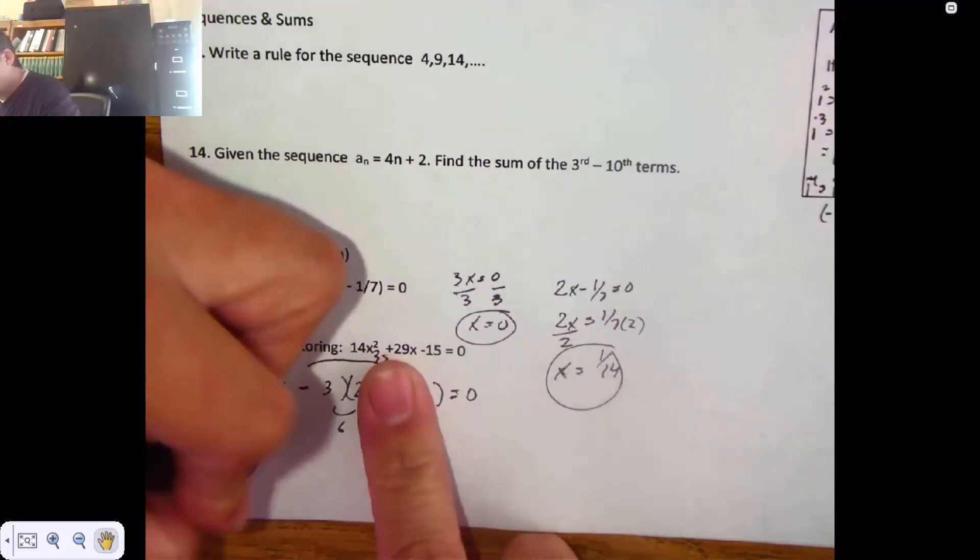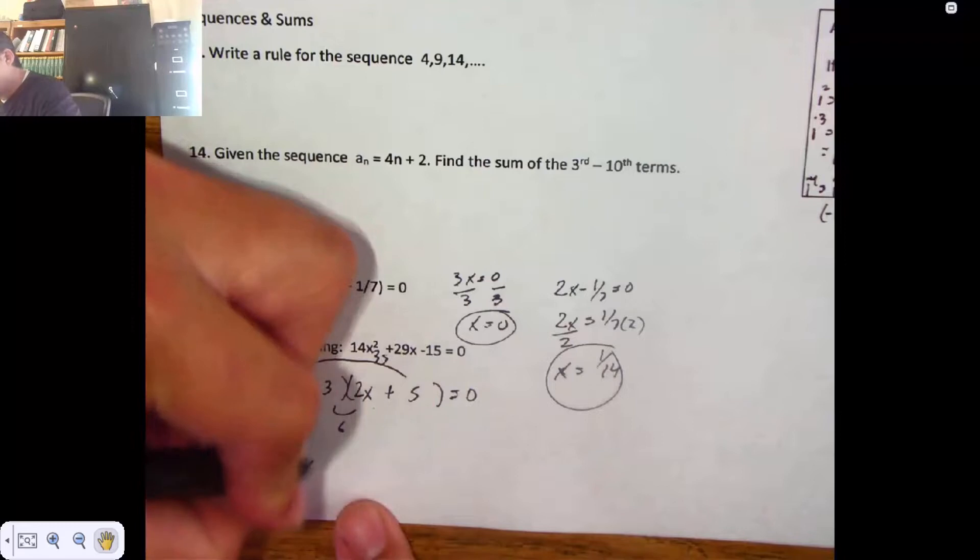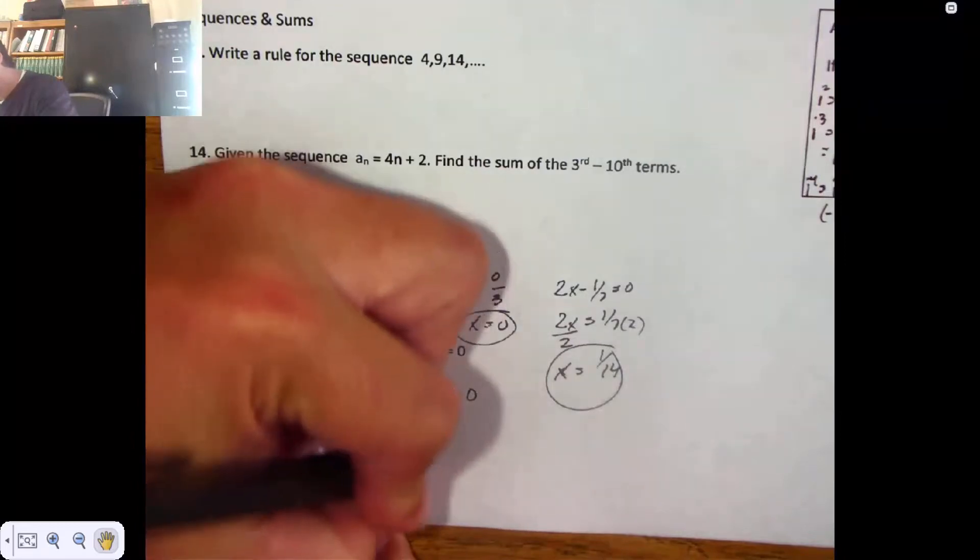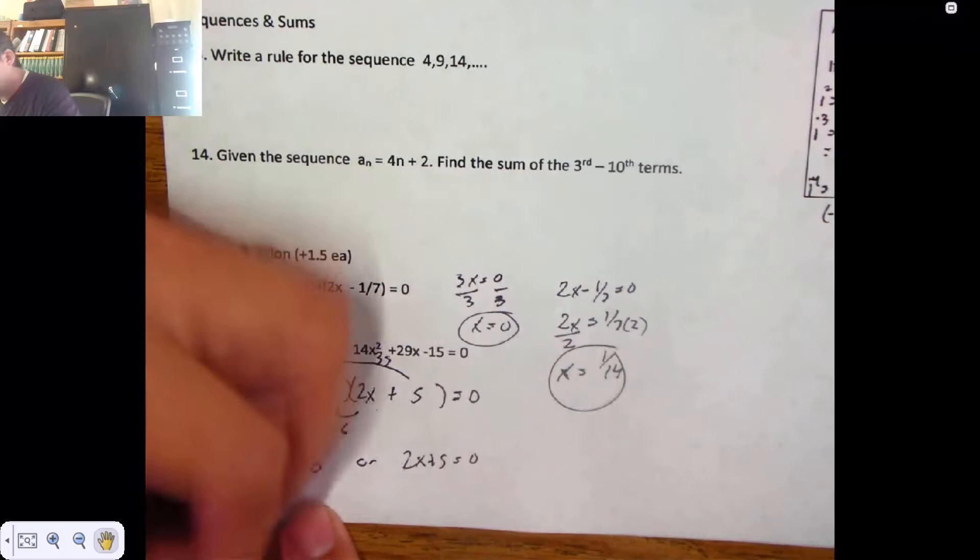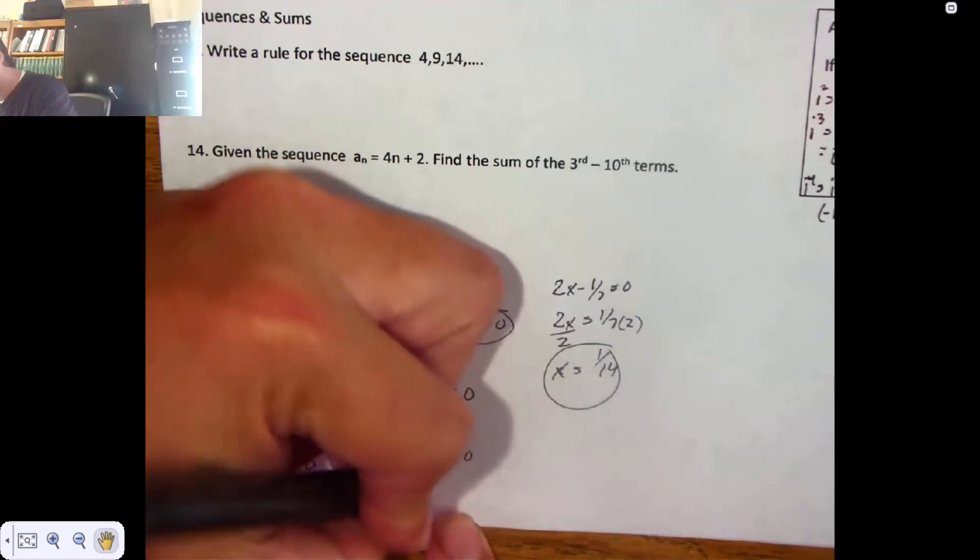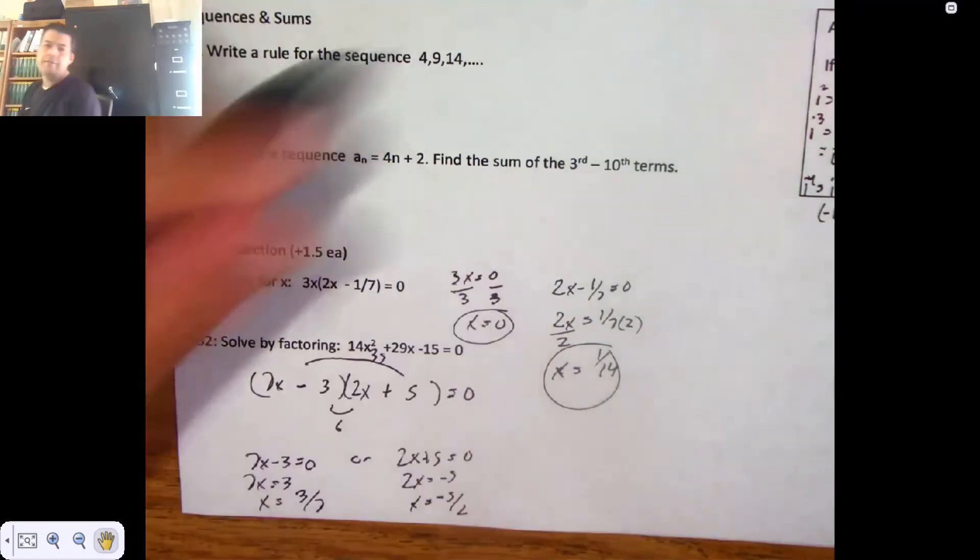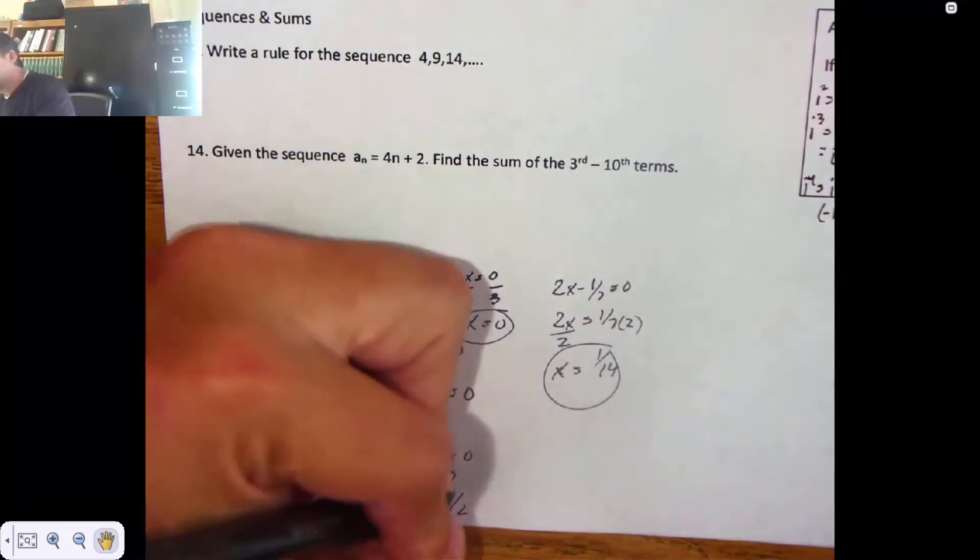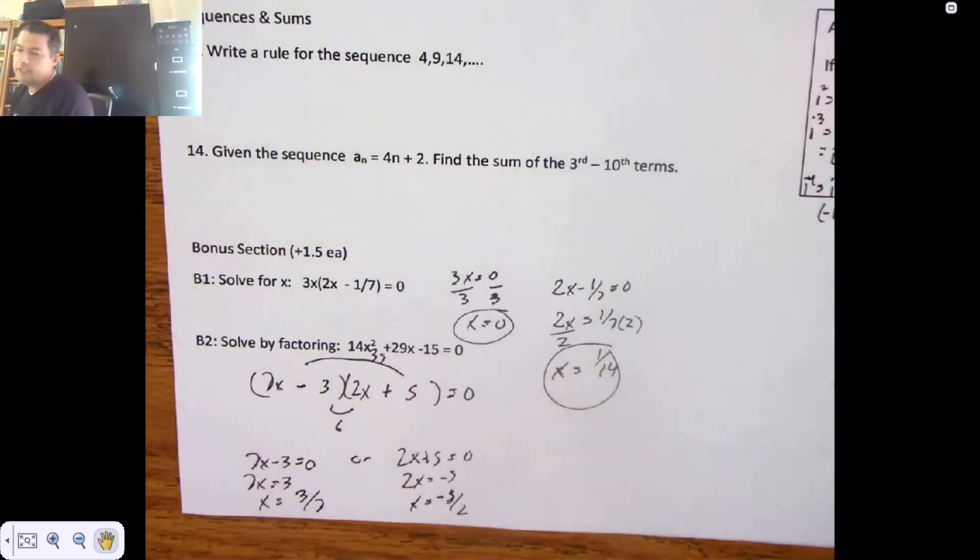All right. Use that cover up property. 7 X minus 3 is nothing. Or 2 X plus 5 is nothing. Add 3. I get a 7 X equals 3. Divide by 7. 3 sevenths. Subtract 5. Divide by 2. So 3 sevenths and negative 5 halves. And I'm done with bonuses.